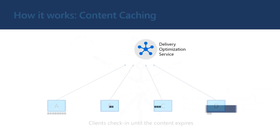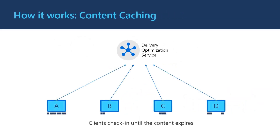After the content is downloaded, the client keeps the Delivery Optimization service informed about whether the content is still available in the cache and what its current IP address is. This information is used to deliver optimal download configuration to other clients requesting the same data with matching configuration.